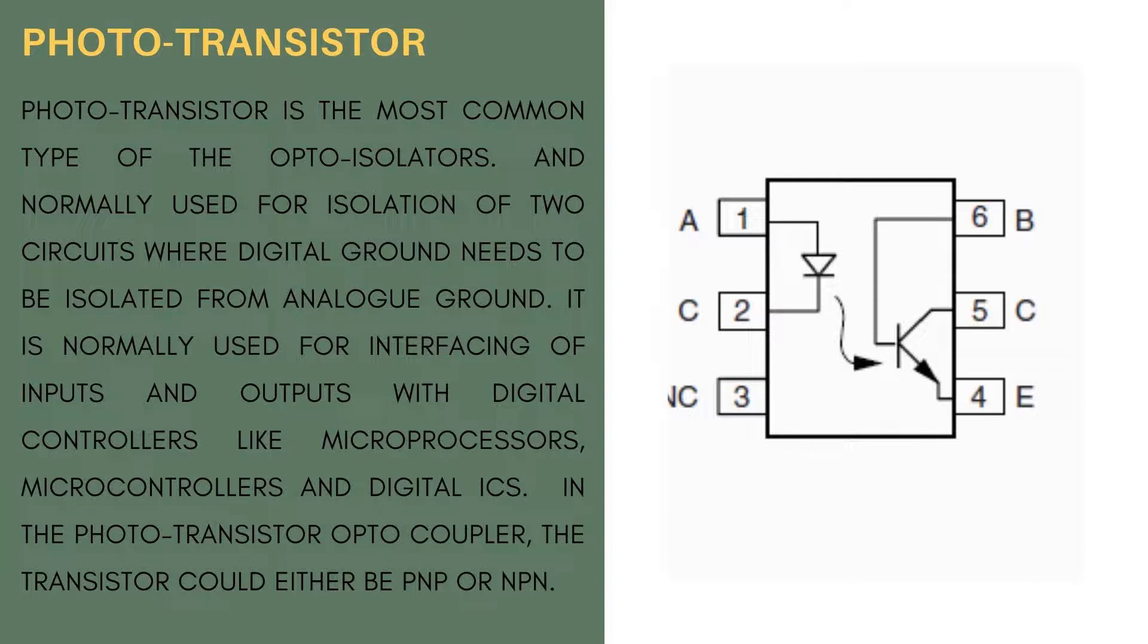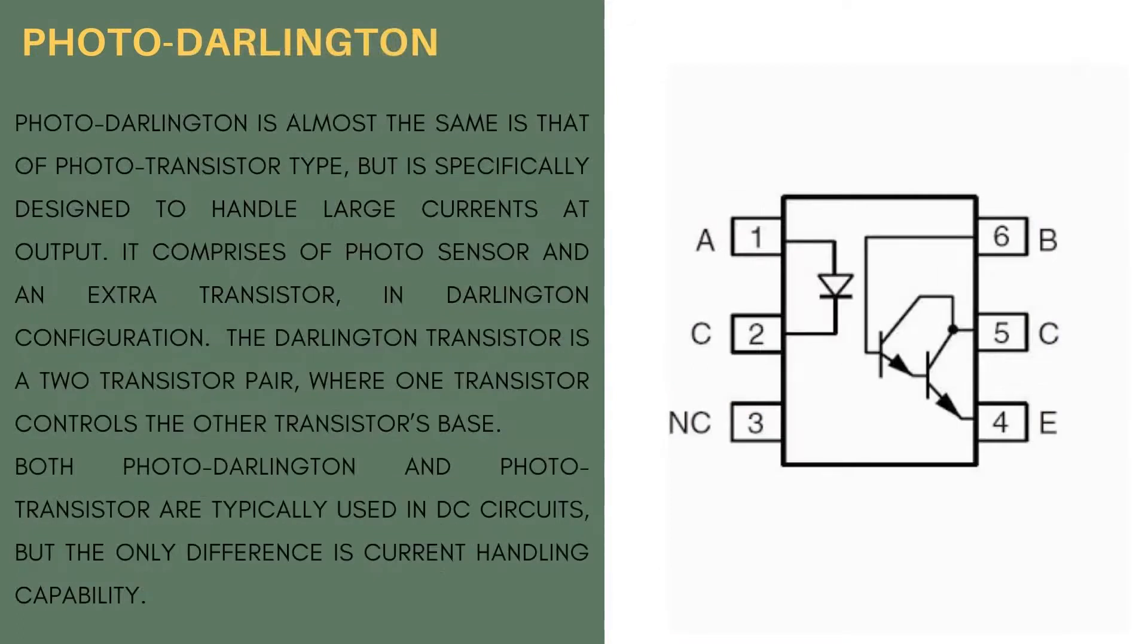In the photo-transistor opto-coupler, the transistor could either be PNP or NPN. Photo-Darlington is almost the same as that of photo-transistor type, and is specifically designed to handle large currents at output. It comprises a photo sensor and an extra transistor in Darlington configuration.